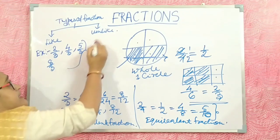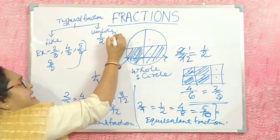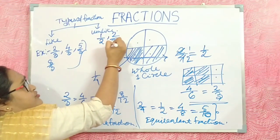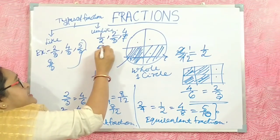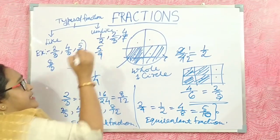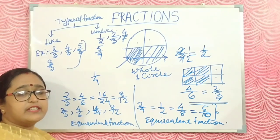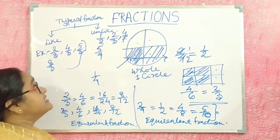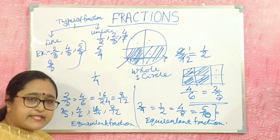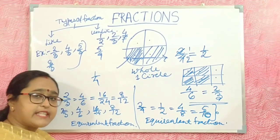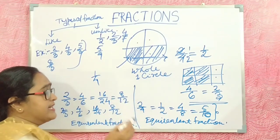Unlike Fractions have a different denominator. You can write any numbers, but they must have a different denominator. Having a different denominator is called Unlike Fractions.